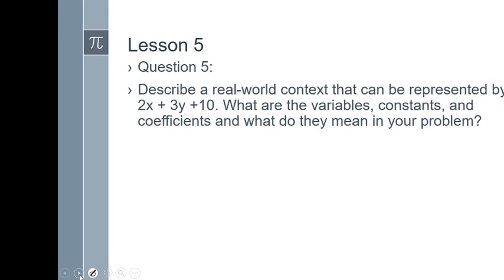Alright, so the last question here, it says, describe a real-world context that can be represented by and I give this expression involving two variables and a constant, right? What are the variables, the constants, the coefficients, and what do they mean in your problem? So clearly, there's many acceptable answers because you can make up any problem that you want. But what you need is you need something that can change, an unknown value. You need two different variables here. So you wouldn't say I have two socks and three shirts and ten pants because there would be no variables in there.